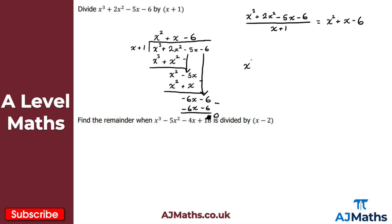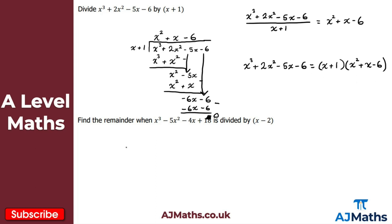Another point on notation: since the remainder is zero we can express the cubic as a product — x plus 1 times x squared plus x minus 6. You might sometimes be asked to give the solution in this factored form. This can only be done if the remainder is zero; if the remainder were any non-zero value you couldn't express it this way.